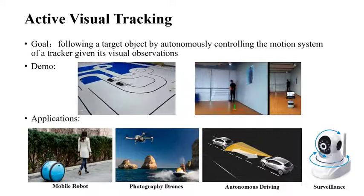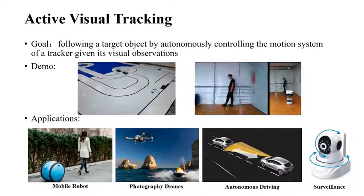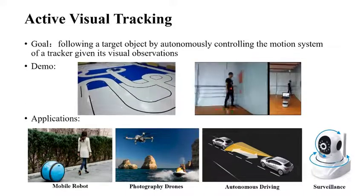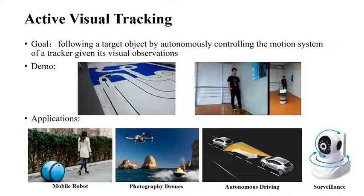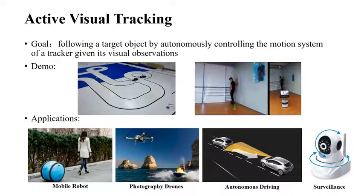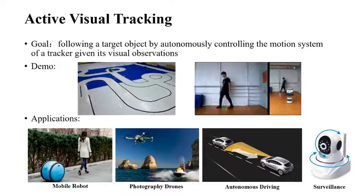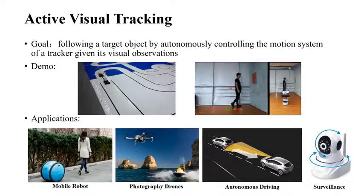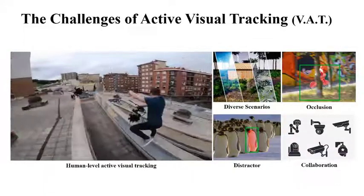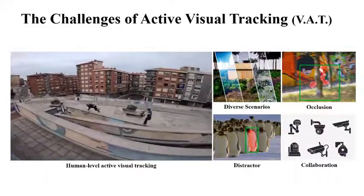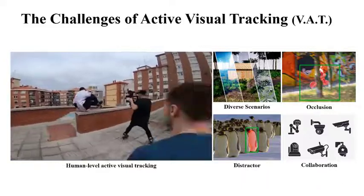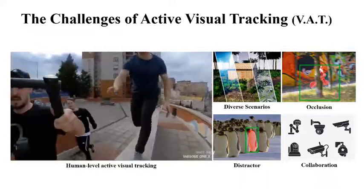The goal of an active visual tracker is to follow a target object by autonomously controlling the motion system of a tracker given its visual observations. Applications include mobile robots, photography drones, autonomous driving, and video surveillance. Active visual tracking is very challenging, especially when the target is moving in a complex environment.